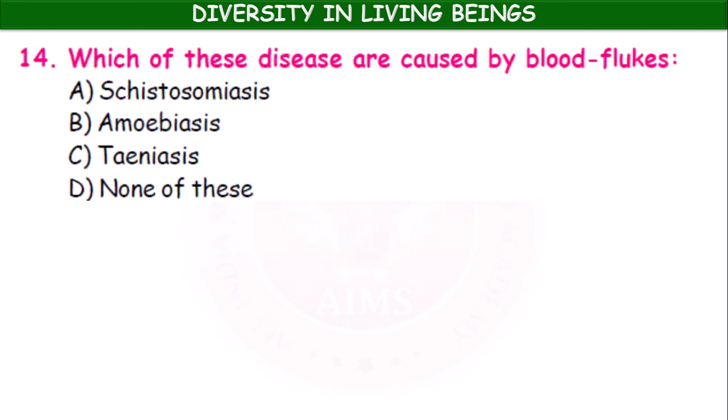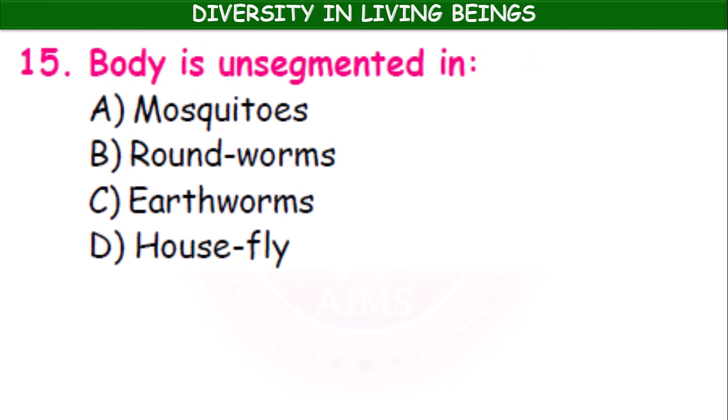What disease is caused by the blood fluke Schistosoma haematobium? The answer is schistosomiasis. The body is unsegmented in mosquitoes, roundworms, earthworms, or housefly — in roundworms the body is not segmented.